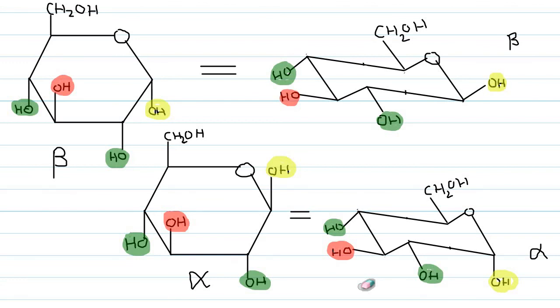That is why we need three projections: the Fischer projection, the Haworth projection showing alpha and beta, and the cyclic chair conformation showing alpha and beta forms. Thank you very much for watching this video.